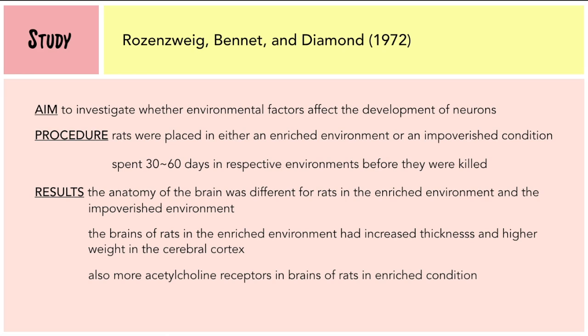A study that corresponds to Principle 2 is a study by Rosenzweig, Bennett, and Diamond in 1972. The aim was to investigate whether environmental factors affect the development of neurons. The researchers placed rats in either an enriched environment or an impoverished condition. In the enriched environment, 10 to 12 rats were put in a cage with different stimulus objects to play with, and this group also received maze training. In the impoverished condition, each rat was placed in an individual cage with no stimulus. The rats spent 30 to 60 days in their respective environments before they were killed so that their brain anatomy could be studied.